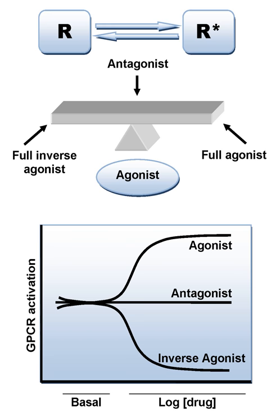For example, if the natural activation of the α-1 adrenergic receptor leads to vasoconstriction, an α-1 adrenergic antagonist will result in vasodilation.